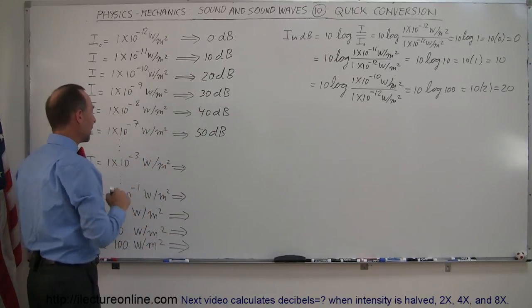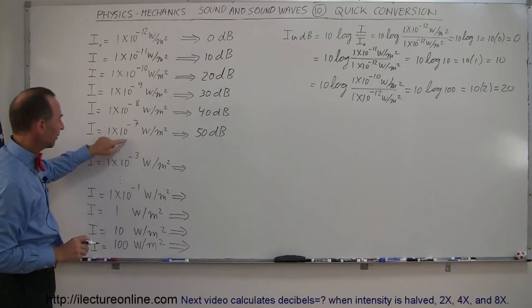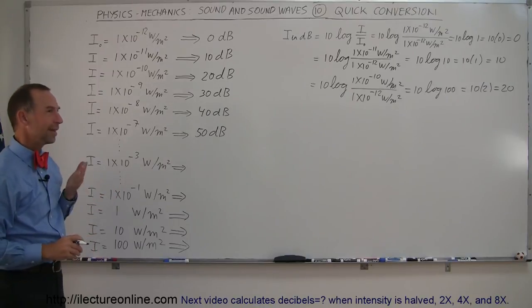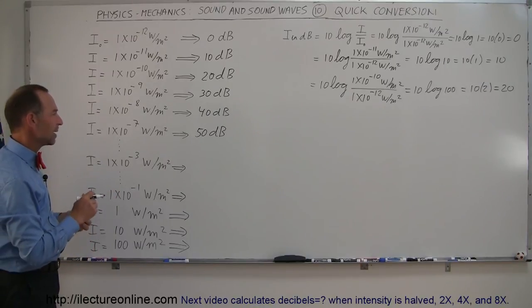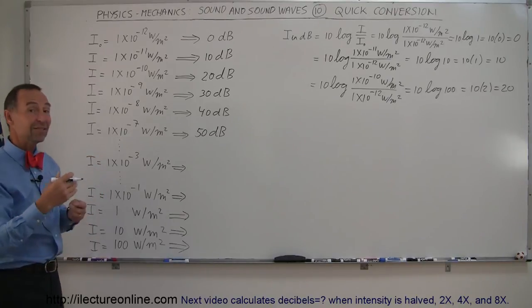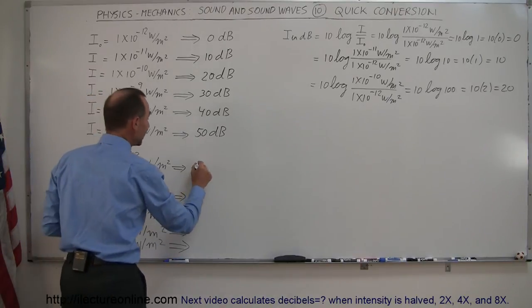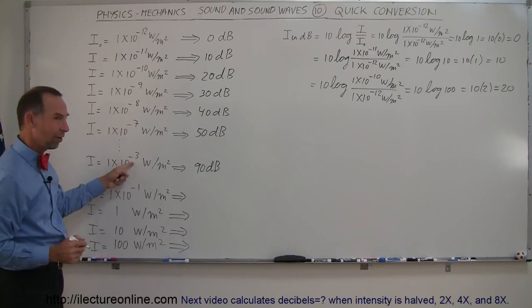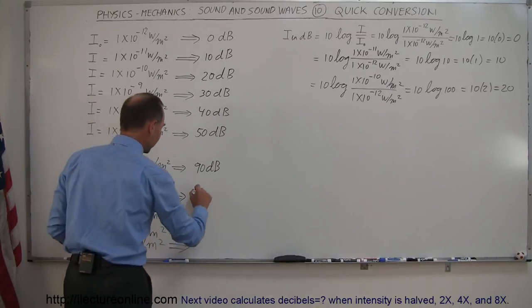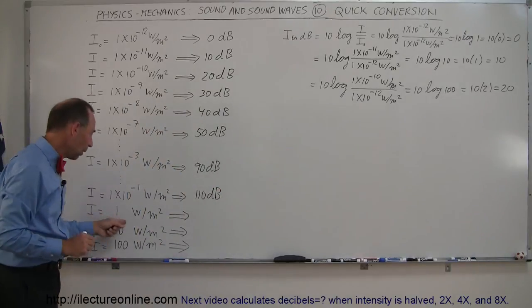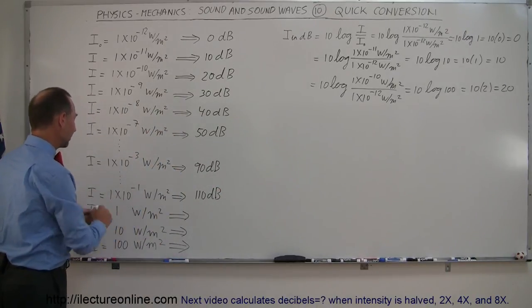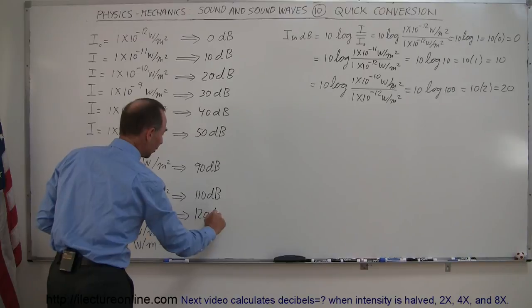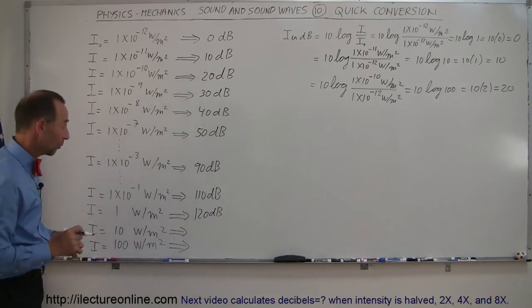Coming down the line, 10⁻⁷ W/m² would be 50 decibels. Then 10⁻³: this is 10,000 times as loud as 10⁻⁷, because the difference is 10⁴. That's 10×10×10×10, and each multiplication by 10 adds 10 more decibels, so this should be 90 decibels. Then 10⁻¹ is 100 times as loud as 10⁻³ — that's another 20 decibels, giving 110 decibels. And 1 watt per square meter is 10 times as loud as 10⁻¹, so add 10 more decibels: 120 decibels, which we know as the threshold of pain.